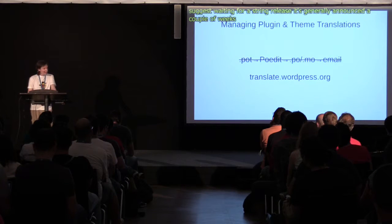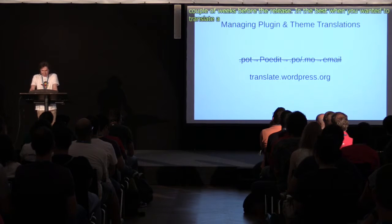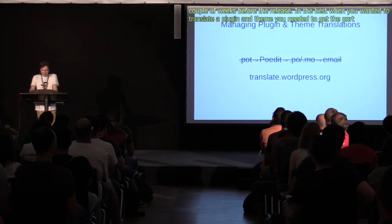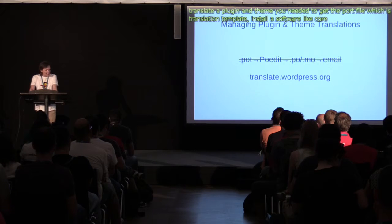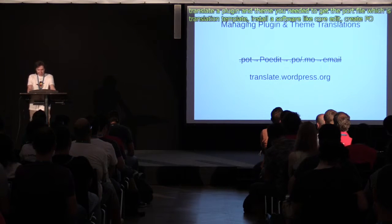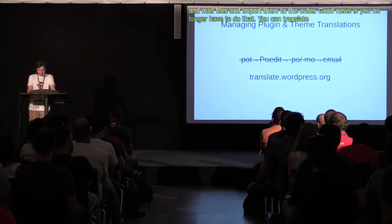In the past, when you wanted to translate a plugin or theme, you needed to get a POT file — a translation template — install software like PoEdit, create PO and MO files, and email them to the plugin author. The good news is that now you no longer have to do that. You can translate almost any plugin in the directory on the Translate.WordPress.org site, which is powered by GlotPress. Some plugins might not be properly prepared for localization, in which case you should report the issue to the plugin author.